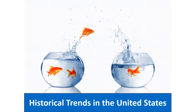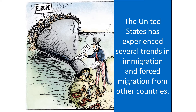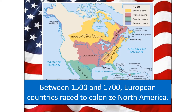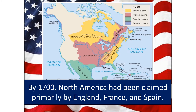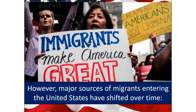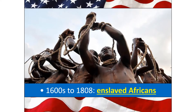Historical trends in the US. The United States has experienced several trends in immigration and forced migration. Between 1500 and 1700, European countries raced to colonize North America, and by 1700, it had been claimed primarily by England, France, and Spain. The Atlantic slave trade saw millions of enslaved Africans forced to the Americas — most ending up in the Caribbean and South America, but many in North America as well between the 1600s and 1808.